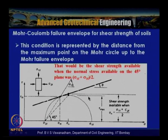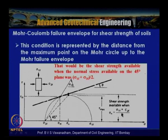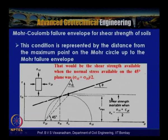This condition is represented by the distance from the maximum point on the Mohr circle up to the Mohr-Coulomb failure envelope. The shear strength available when the normal stress is (sigma_1f + sigma_3f)/2 (at the 45-degree plane) is that vertical ordinate on the failure envelope, which exceeds tau_max. This graphically explains why failure does not occur on the plane of maximum shear stress.